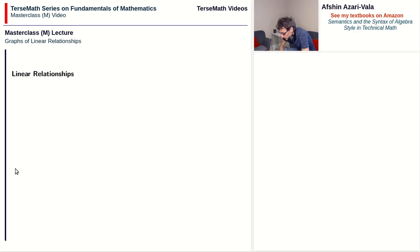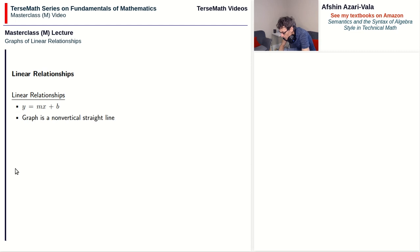Now that we've talked about the features of the graphs of the basic relationships, let's see how we can combine them to arrive at the most general linear relationship with the equation y equals mx plus b. Such equations have graphs that are non-vertical straight lines, and the slope is m. I'll leave it to you to show that the slope is m: find two points (x1, y1) and (x2, y2), put them in the slope formula, and work out m.